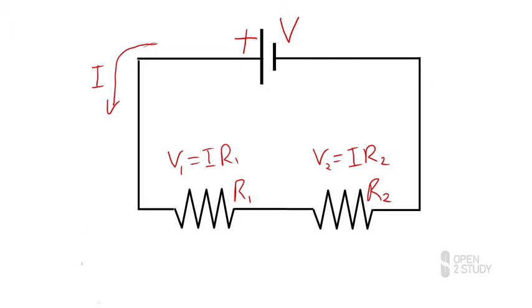Now, what we know here is that the sum of those potential differences must be the total potential difference that our EMF is providing. V1 plus V2 must equal the total voltage across the entire circuit. And we can now write that as I times R1 plus I times R2. Or, with a little bit of algebra, it's the current multiplied by R1 plus R2.